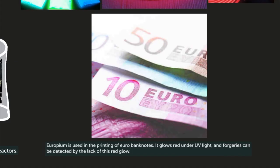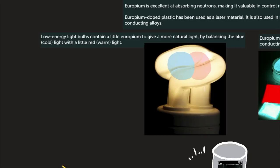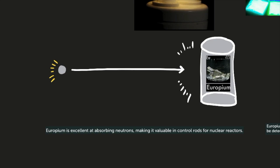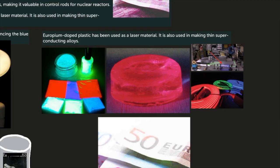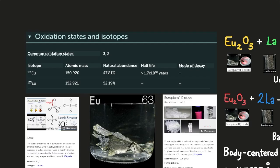Let's continue with element number 63, Europium. Europium uses today. Europium is used in the printing of euro banknotes. It glows red under UV light, and forgeries can be detected by the lack of this red glow. Low energy light bulbs contain a little europium to give a more natural light, by balancing the blue cold light with a little red warm light. Europium is excellent at absorbing neutrons, making it valuable in control rods for nuclear reactors. Europium doped plastic has been used as a laser material. It is also used in making thin superconducting alloys.